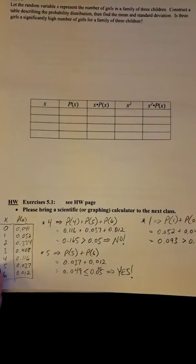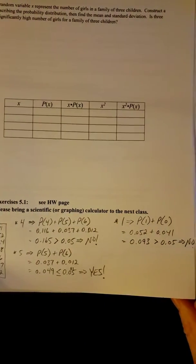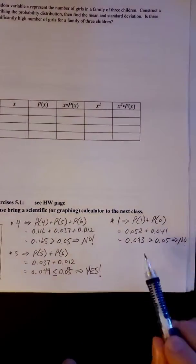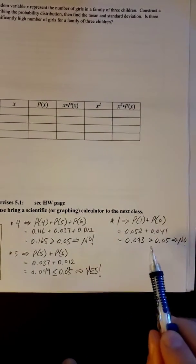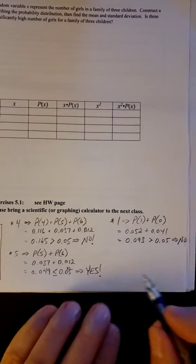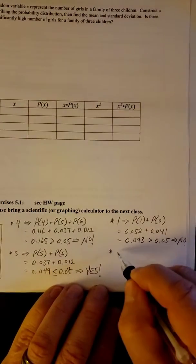So 1 would not be significantly low because 1 and 0 together, probability of 1 and 0 together, is greater than 5%.